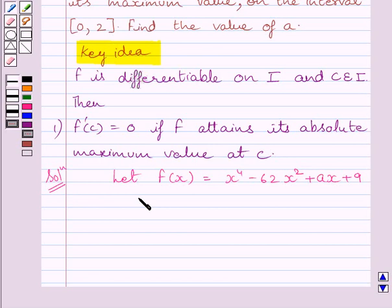Now differentiating both sides with respect to x, we get f'(x) equal to 4x cubed. We know derivative of x raised to the power 4 is 4x cubed. Now derivative of 62x square is 124x. Derivative of ax is a and derivative of 9 is 0. So we get f'(x) equal to 4x cube minus 124x plus a.